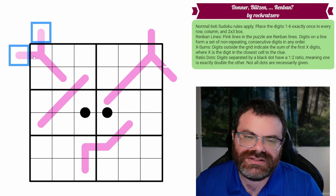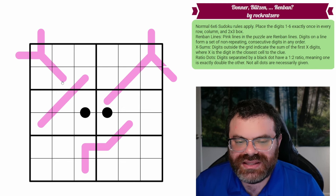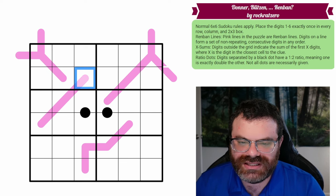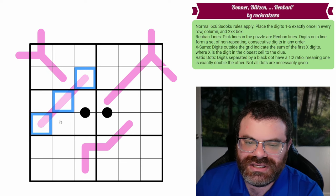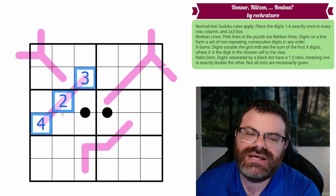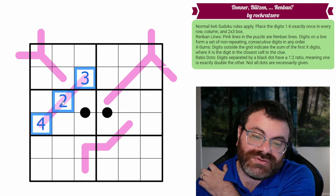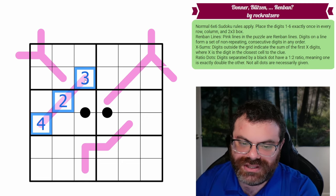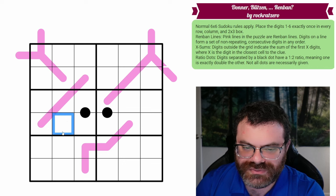We have these pink lines in the grid. These are Renband lines. That means they contain a set of consecutive digits, but in any order. So let's take this as an example. This could be 2, 3, 4 like this. This is a set of consecutive digits. They're not allowed to repeat digits. It's literally just take 3 consecutive digits, put them on the Renband in any order.